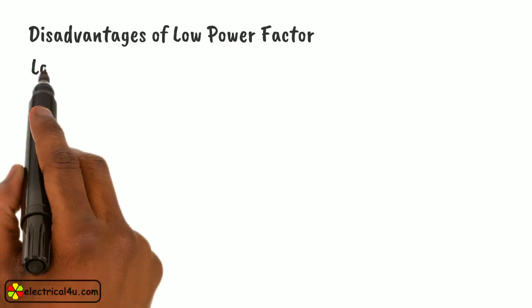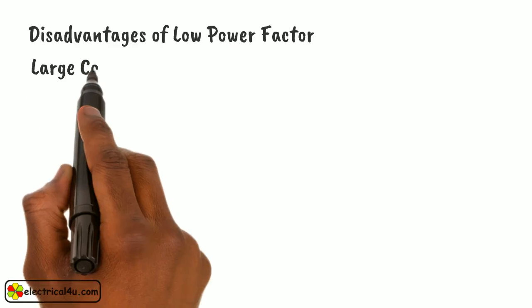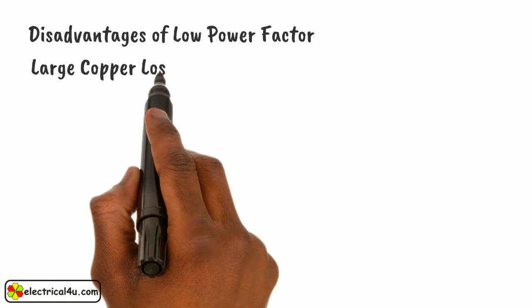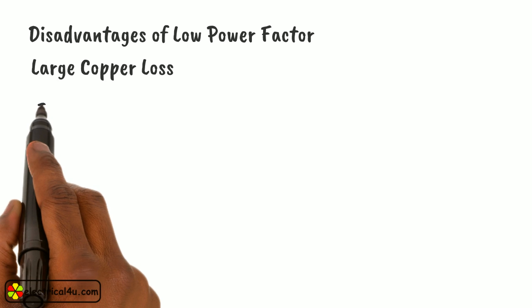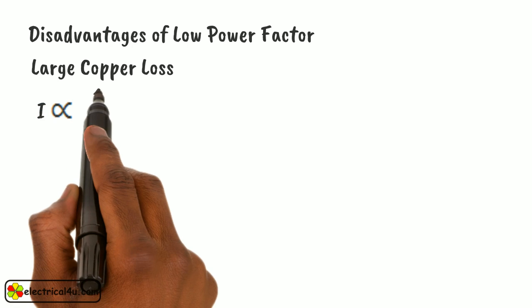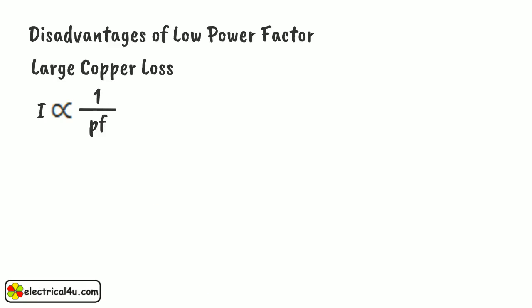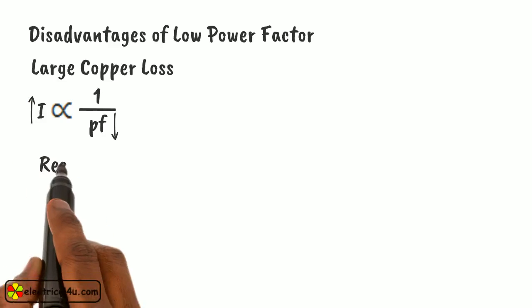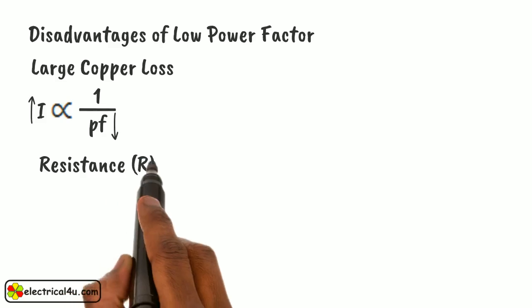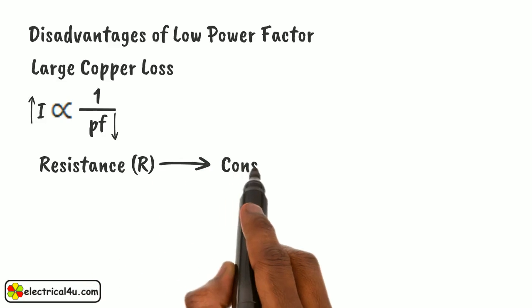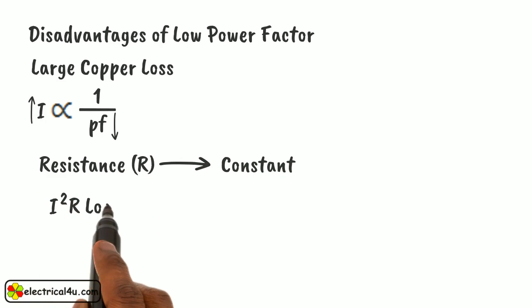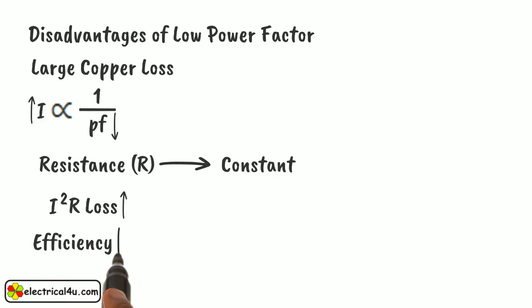The third point is large copper losses. The line current of a system is inversely proportional to the power factor. So, if the power factor of a system becomes low, the current flowing through it becomes proportionally more. As the resistance of the system is nearly fixed, the copper loss of the system, which is the I²R loss, becomes more. This results in poor efficiency of the system.